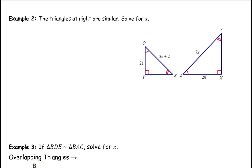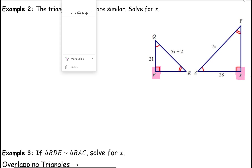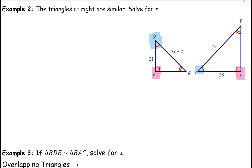The triangles at right are similar — solve for X. They didn't give us a similarity statement, but we do have some symbolism on the triangles, so let's use that to determine which sides correspond with which. Starting with angles: it's easiest to see that the right angle here corresponds to angle P since they're both right angles. Next, angle Q has one arc, so that matches angle Z which also has one arc. And angle R has two arcs, which corresponds to angle Y which also has two arcs.